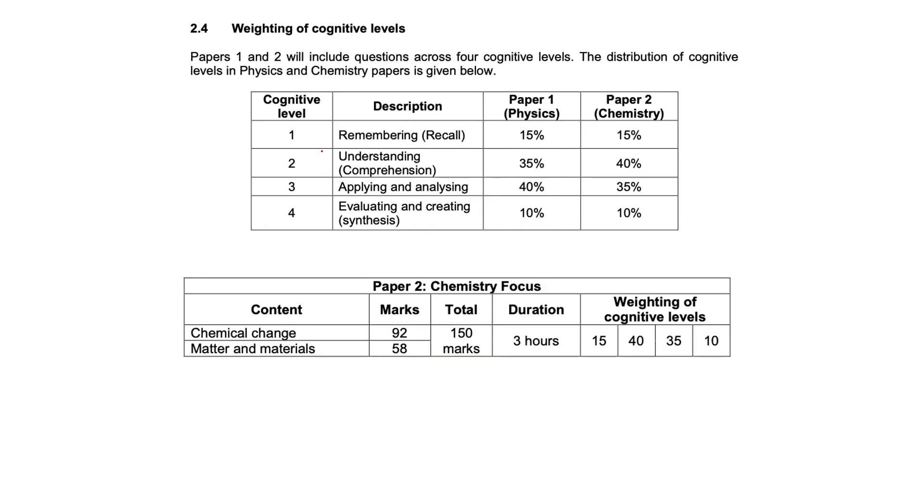This is a weighting of the types of level questions you get in the paper. Level ones will be 15%, level twos 40%, for paper 2.